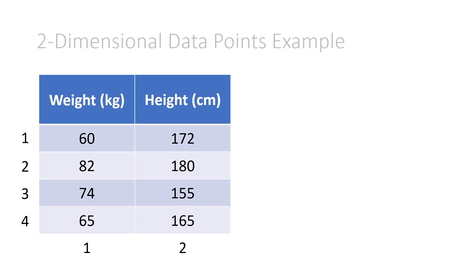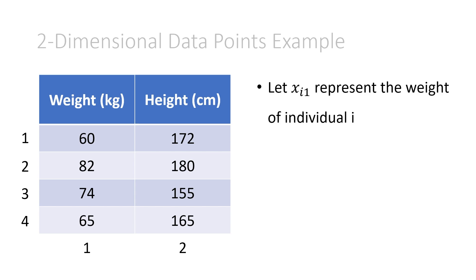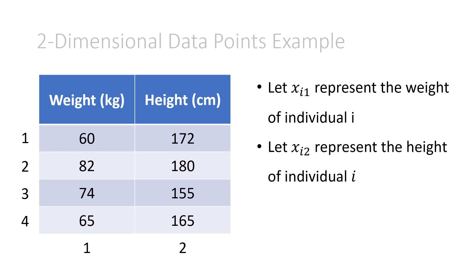So n is equal to four in this example. Keeping our same notation, we'll let xi1 represent the weight of individual i, and let xi2 represent the height of individual i. So x11 is equal to 60. You can think about this as: for the first subscript, you look up the row, and for the second subscript, you look up the column. So x11 goes to the weight of the first individual, which is 60 kilograms. And x32 is 155 — the third row and the second column, that means a height of 155 centimeters. You could do this for the other ones as well.